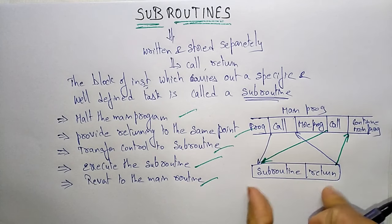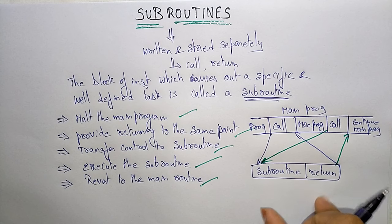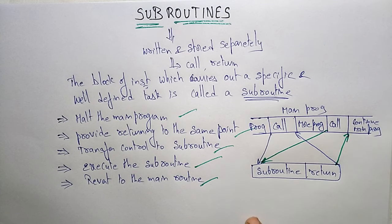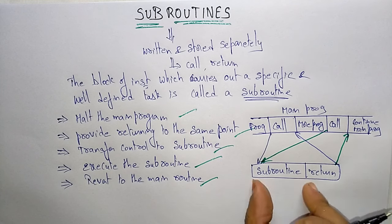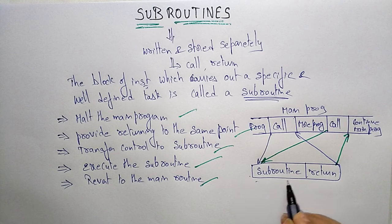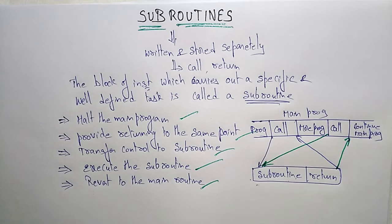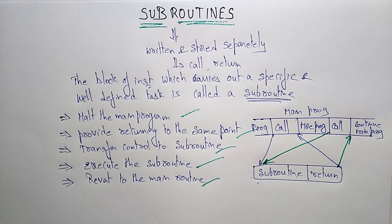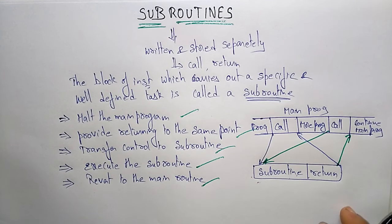So this is the way the subroutine is called whenever it is required in the main program. Instead of repeating the same program segment at all locations, we write and store it separately. Whenever we require it, we just call it into the main program. Thank you.